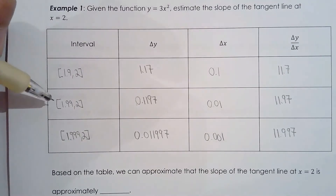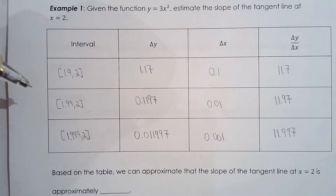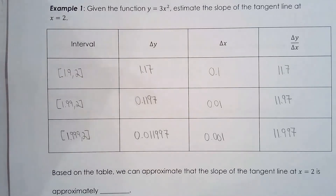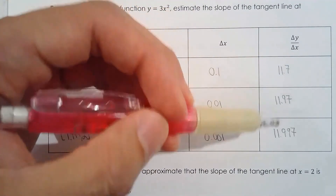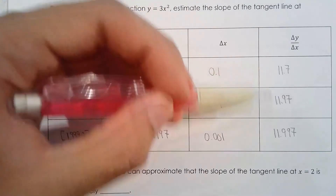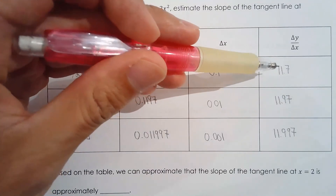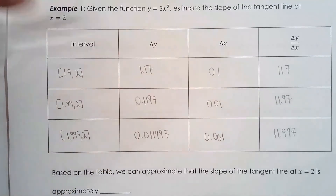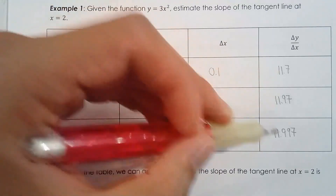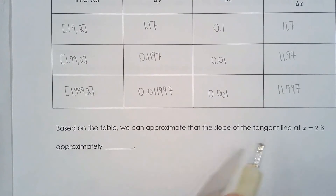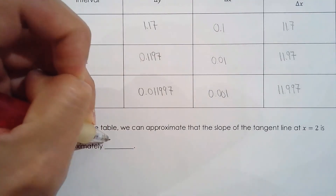To summarize: all you're really doing is performing the secant calculation — finding the average rate of change — three times. These values are very useful because you can see a trend. This trend helps us approximate the slope of the tangent line at x = 2. The slopes are 11.7, 11.97, and 11.997 — so the approximate slope of the tangent line at x = 2 is 12.